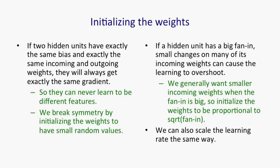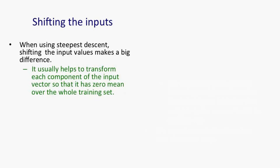One thing that has a surprisingly big effect on the speed with which a neural network will learn is shifting the inputs. That is, adding a constant to each of the components of the inputs. It seems surprising that that could make much difference. But when you're using steepest descent, shifting an input value by adding a constant can make a very big difference. It usually helps to shift each component of the input so that averaged over all of the training data, it has a value of zero. That is, make sure its mean is zero.